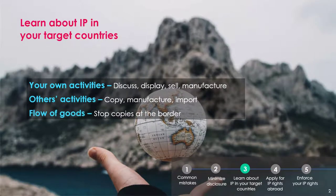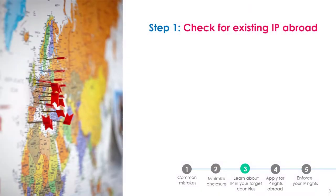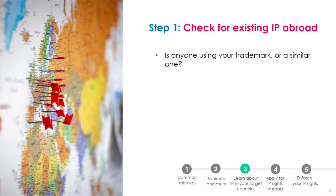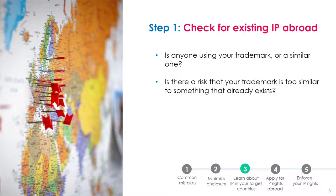It's important to look specifically for IP rights in your target country. If someone already owns the IP there, it could limit or even prevent you from formally protecting your IP in both your home country and your target country. Therefore, investigate: Is anyone using your trademark or a similar one? If so, are they using the same goods and services as you? Is there a risk that your trademark is too similar to something that already exists?